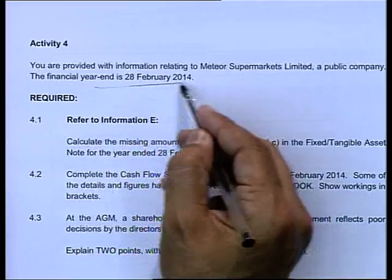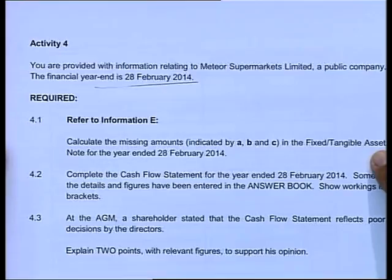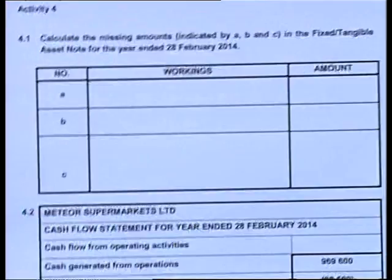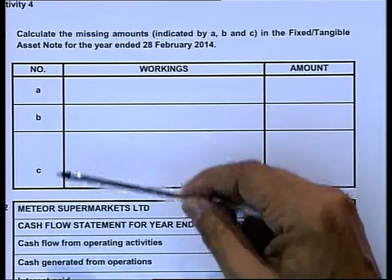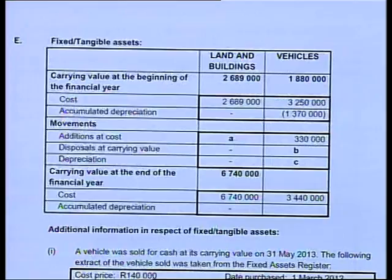Whenever you do the cash flow, you first need to see where the financial year ends, and in this case it's on the 28th of February. You need to read the required part very carefully so that you know what they are asking. It says calculate the missing amounts indicated by the letters A, B and C in the fixed asset or tangible asset note for the year ended. So we'll have to find that in our answer book. Go to your workings and you'll get the final answer there.